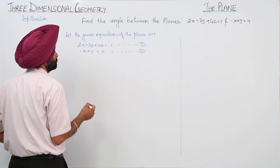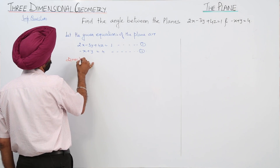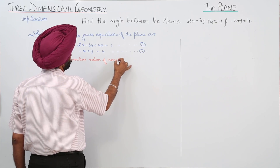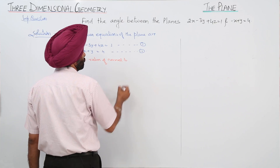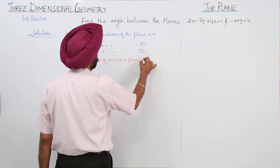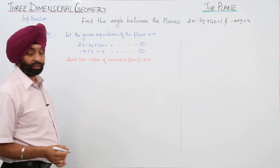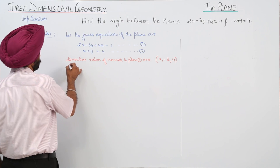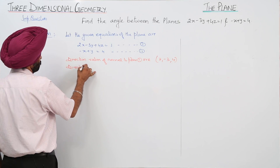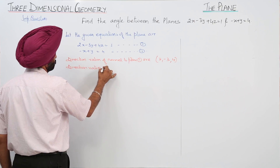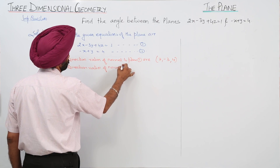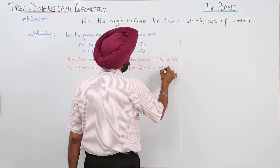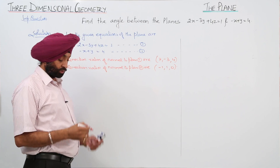The direction ratios of the normal to plane 1 are 2, minus 3, and 4. The direction ratios of the normal to plane 2 are minus 1, 1, and 0.